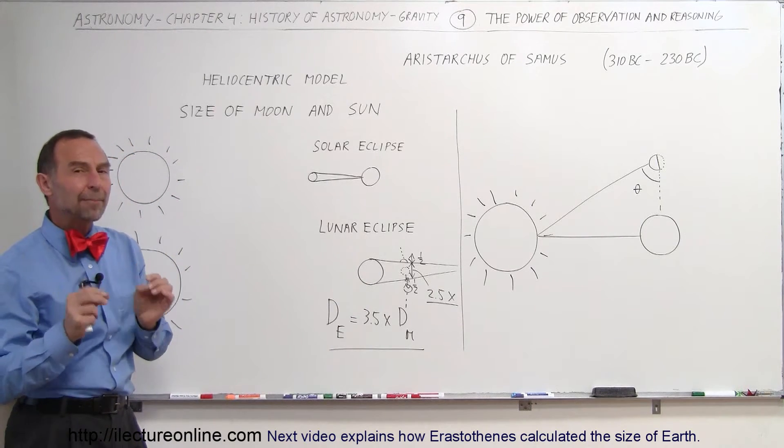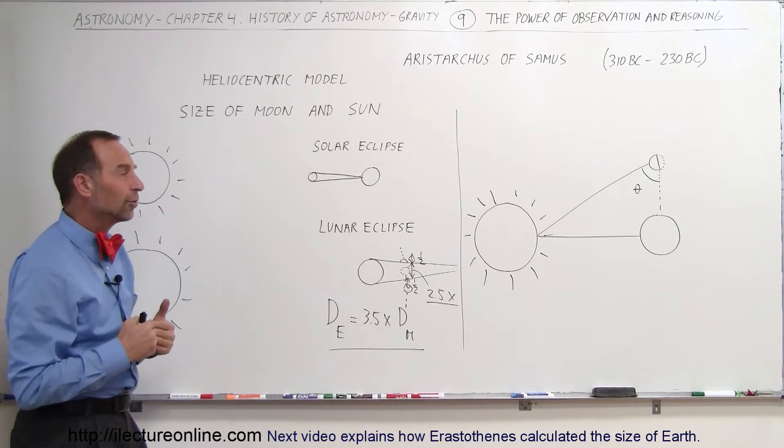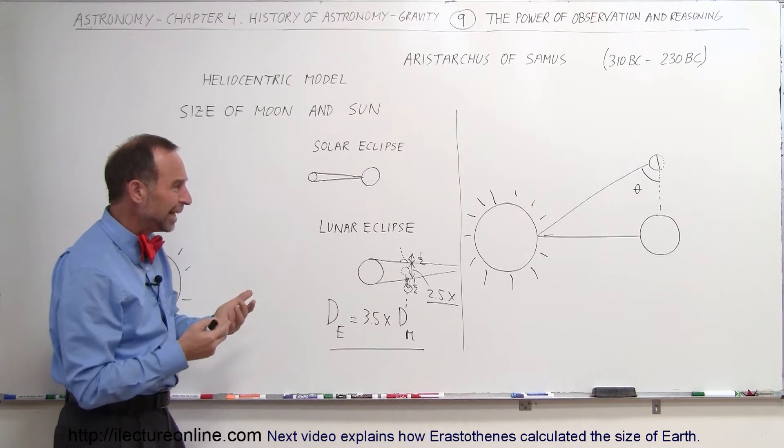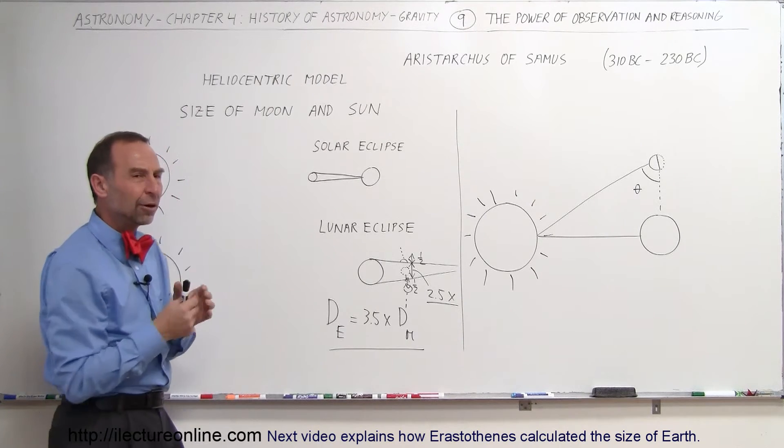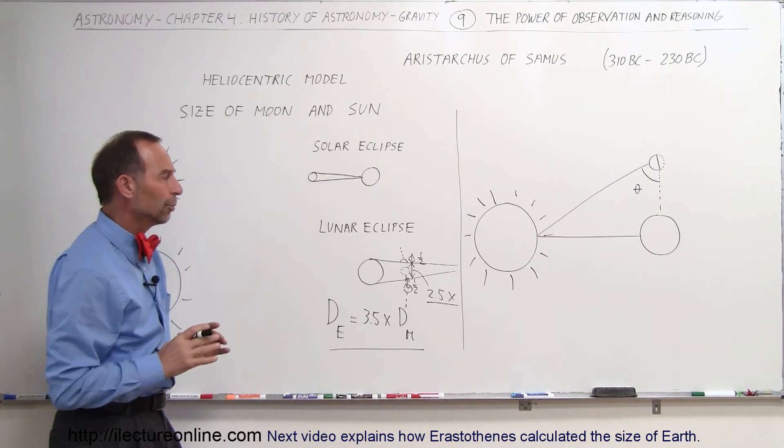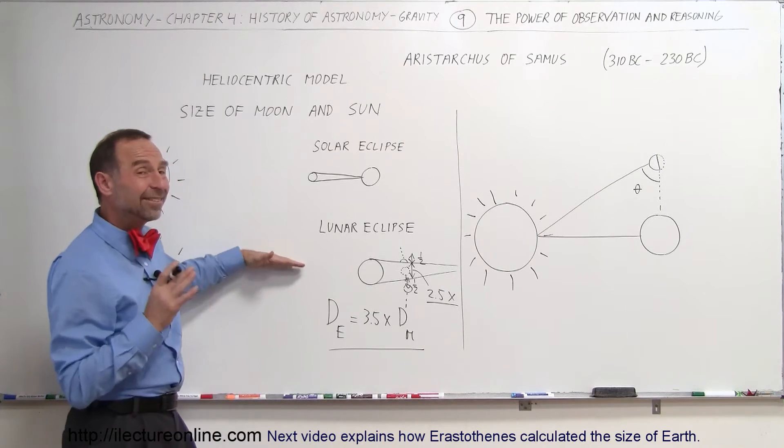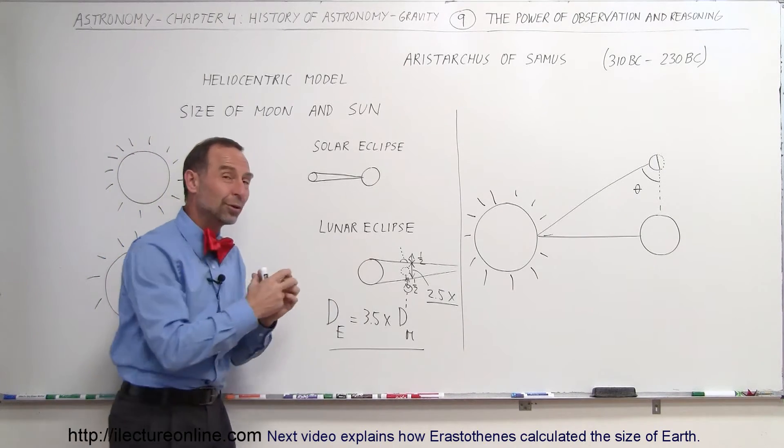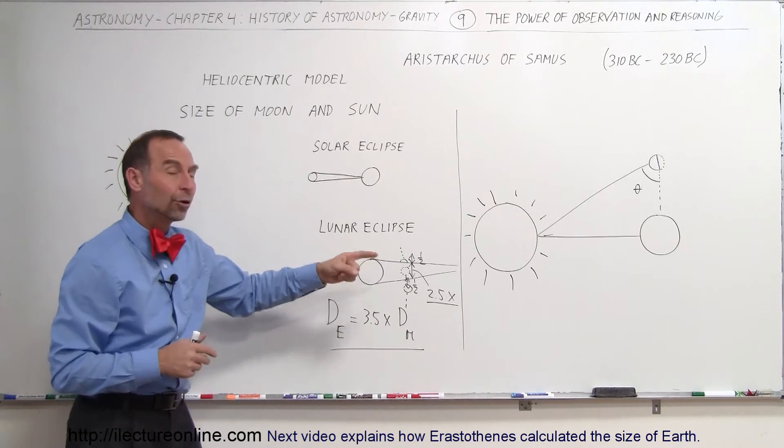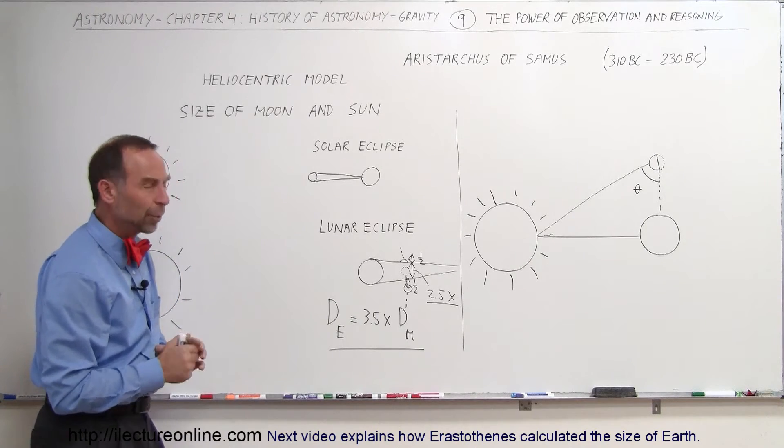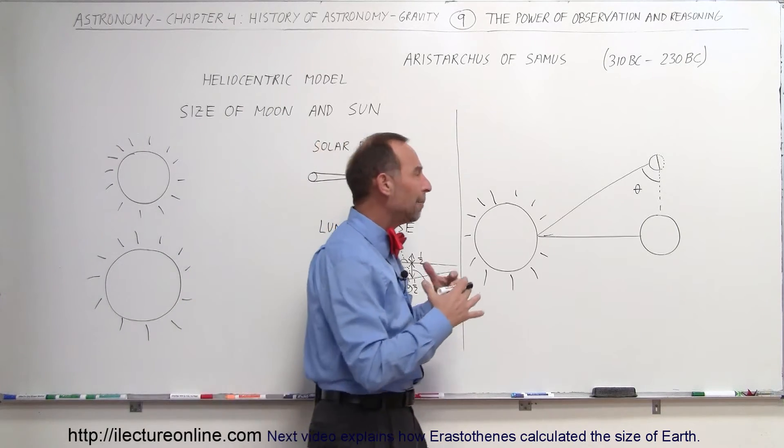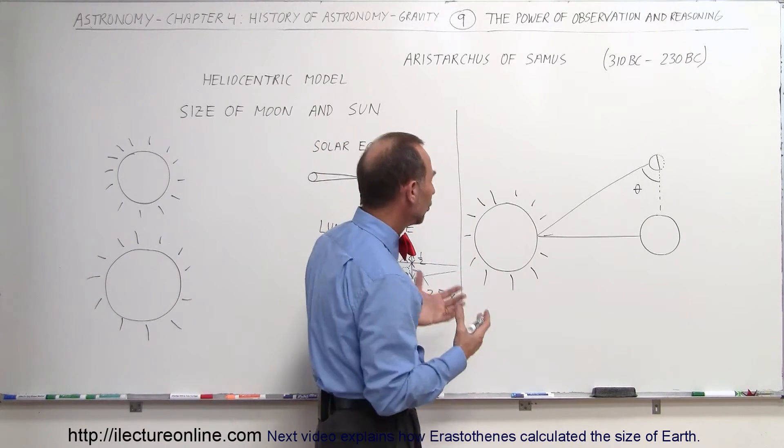Then he tried to figure out how big the Sun was and how far the Sun was. Well, if he didn't know how far it was from the Earth to the Moon, then of course he would have difficulty trying to figure out how far it was from the Earth to the Sun. But at least he could do it in relative terms. And then later on, when Eratosthenes came along and actually figured out the size of the Earth, he could put two and two together. We will get to that in the next video. So now going to the Sun, he also tried to figure out how big the Sun was relative to the Earth and to the Moon.